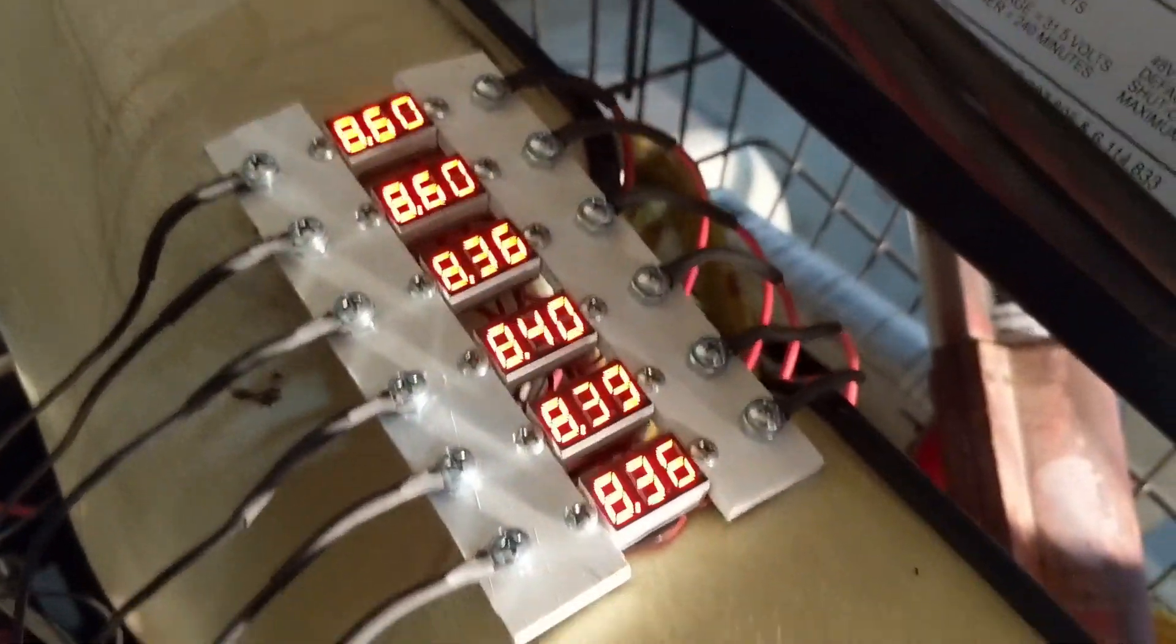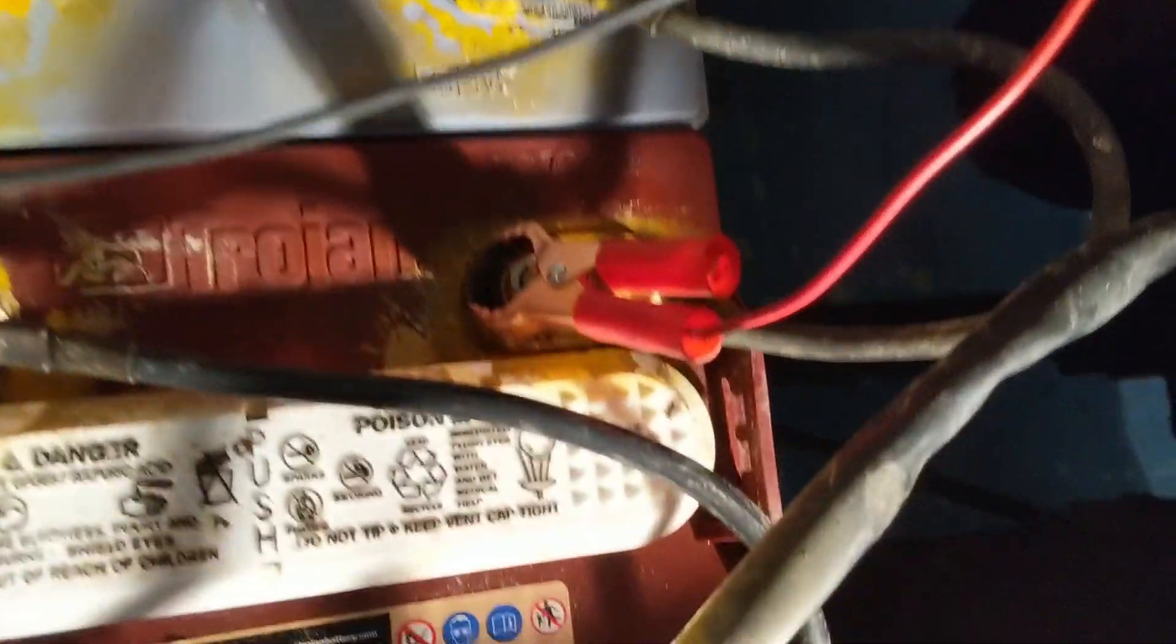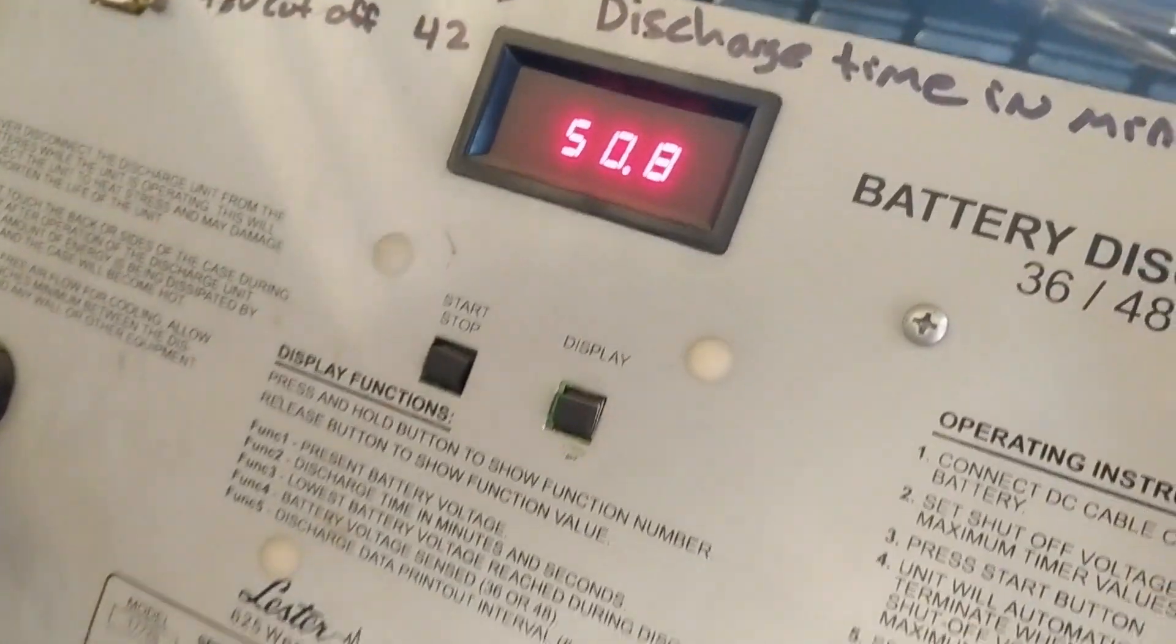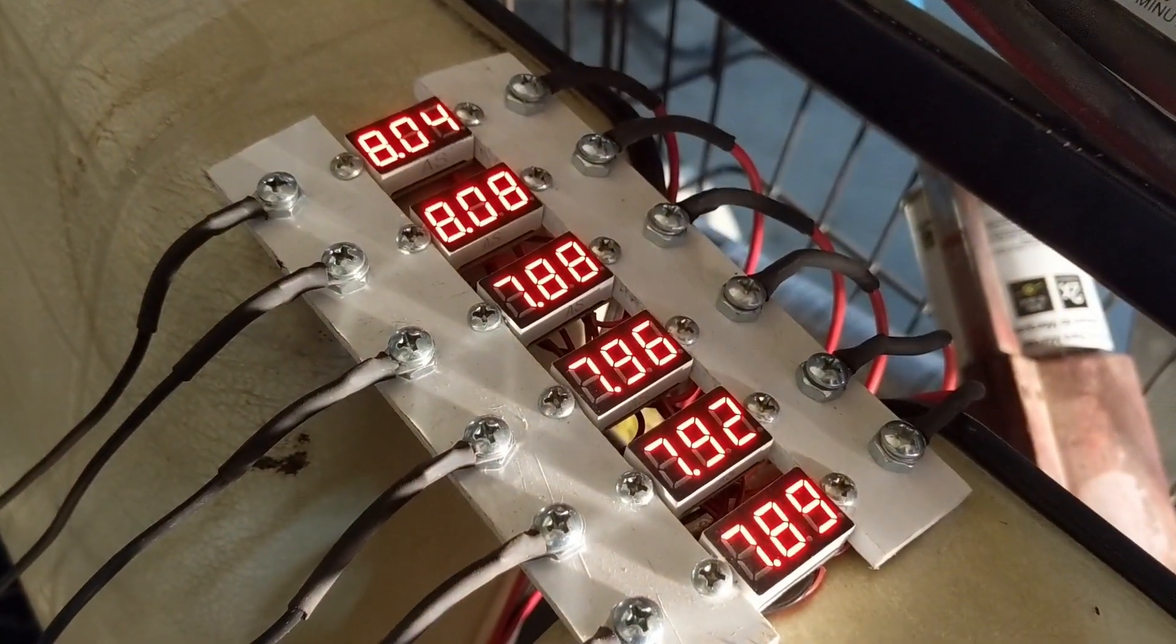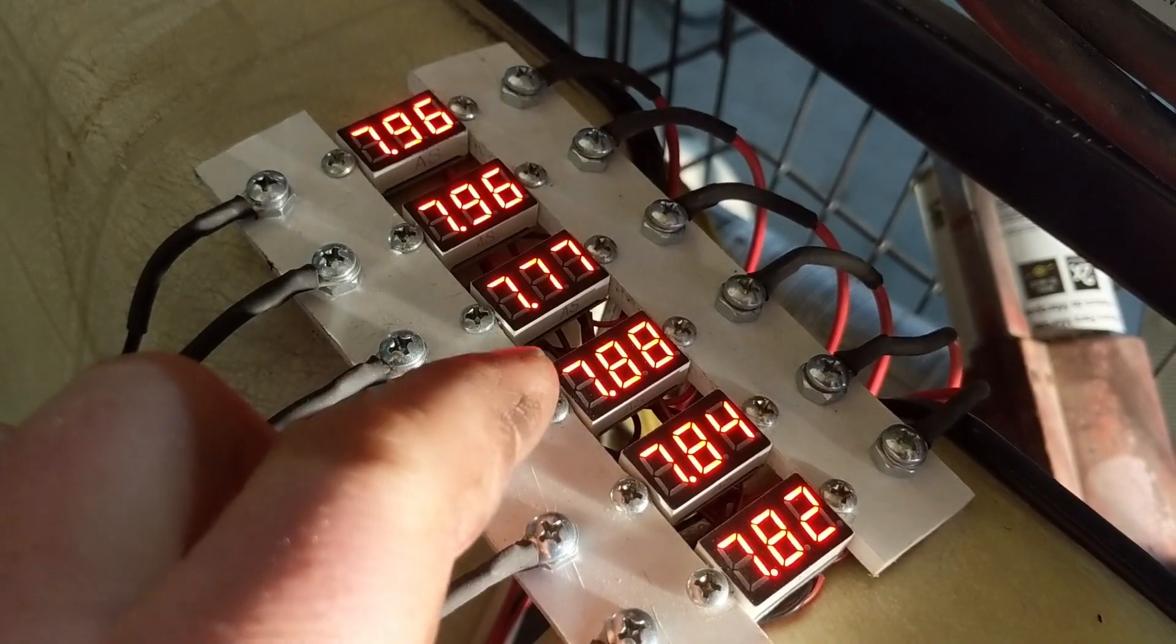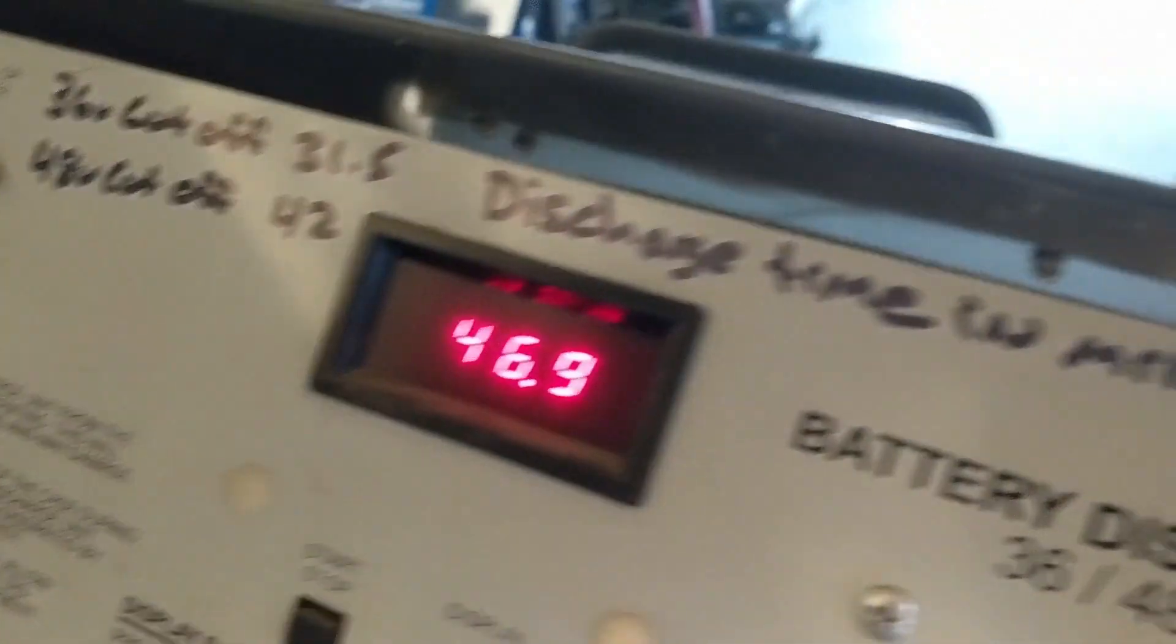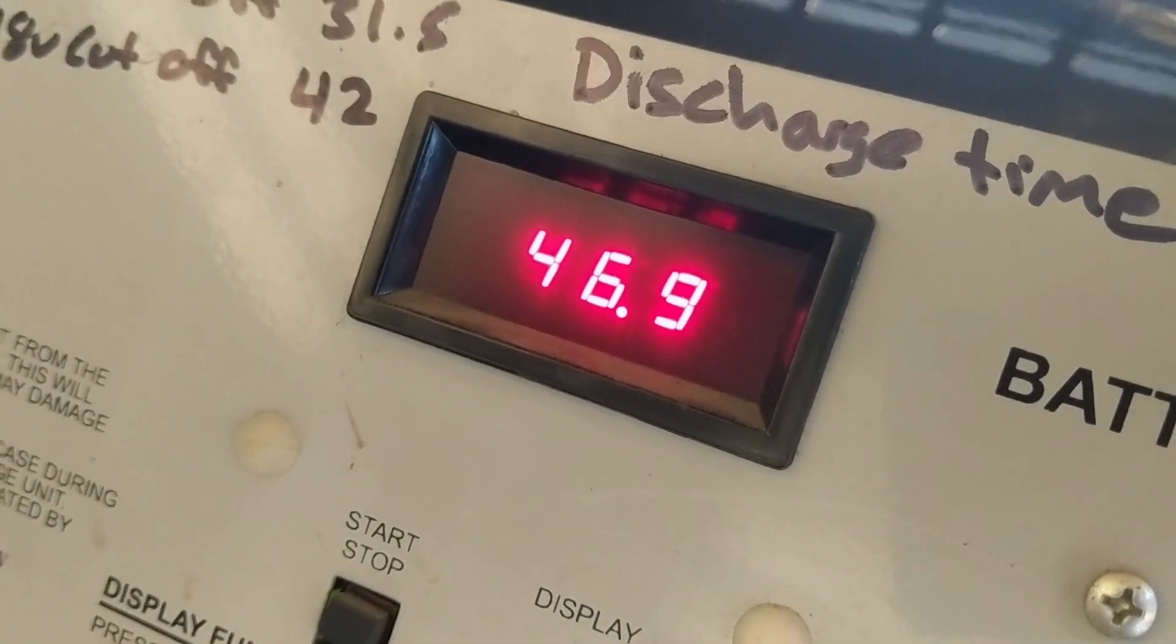Pretty basic hookup, positive and negative all the way across with some alligator clips to each battery, and then these large clamps are at either end of the series pack. So you can see battery number one, it's at eight volts, two is at eight, three is seven point eight four and so on. And you can see it draining.